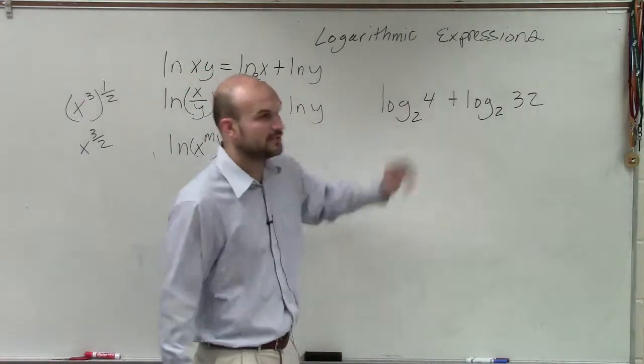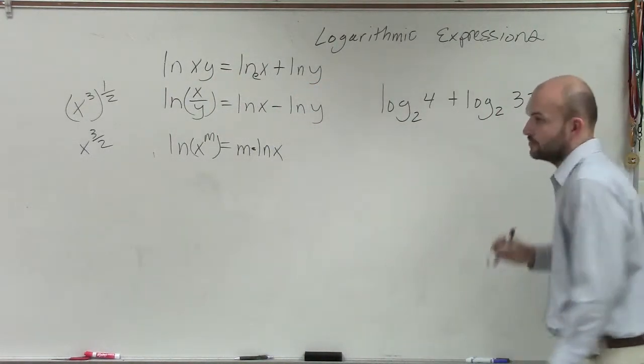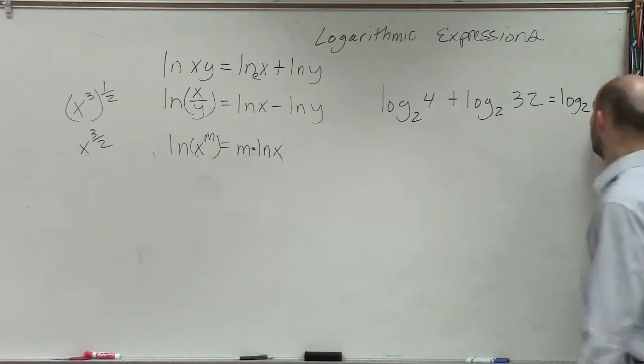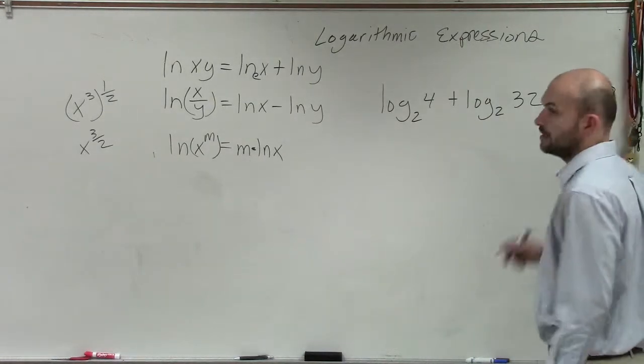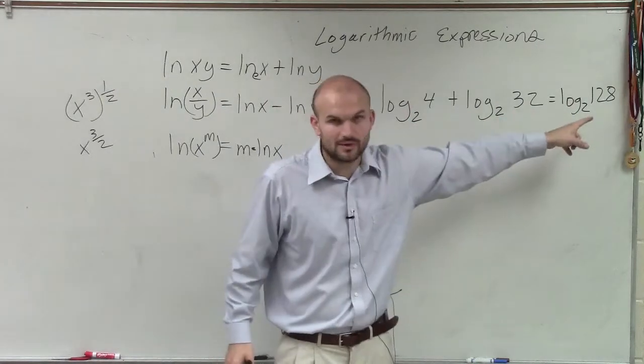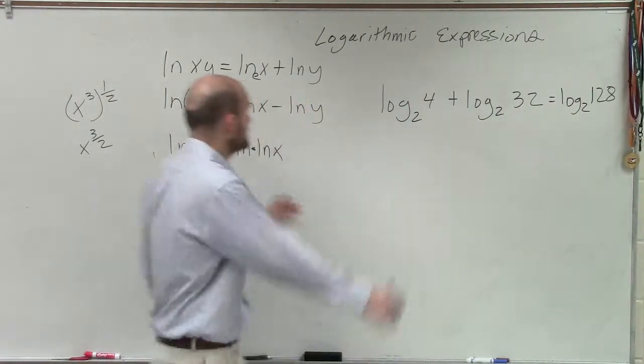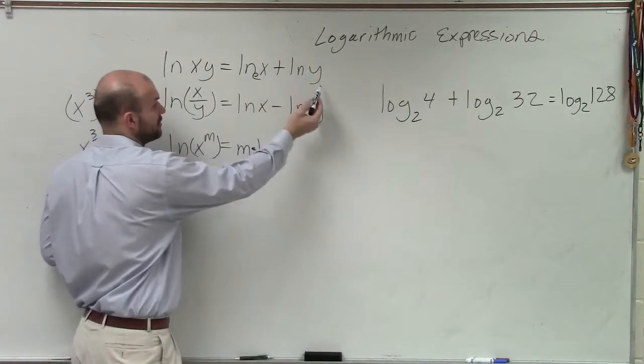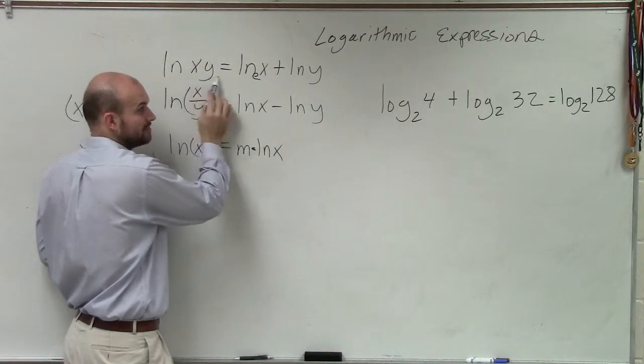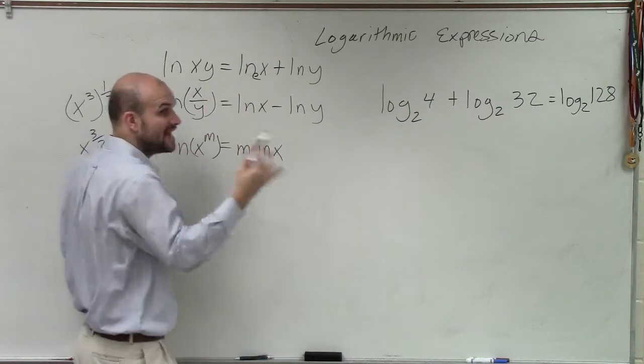Now, if we're going to apply this, we know that equals log base 2 of 128. You multiply them. 4 times 32 equals 128, yes. When you add a logarithm plus another logarithm, you multiply them. You multiply the x times the y, right? As long as they have the same base, though.